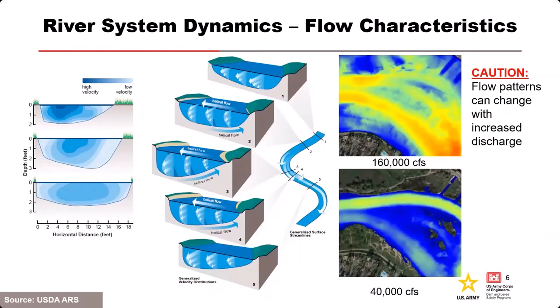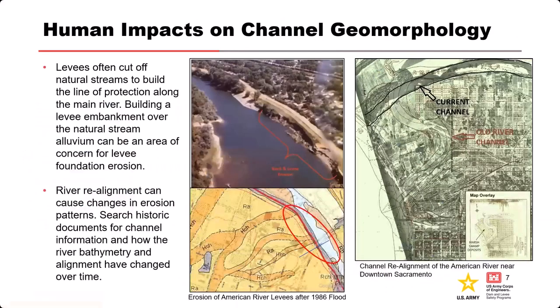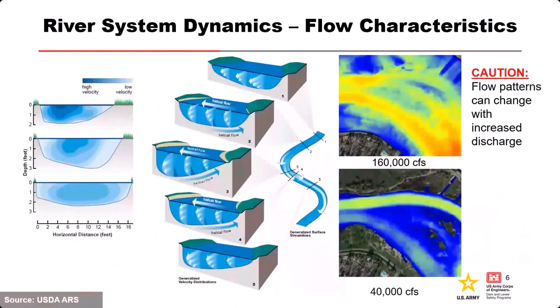Here's an American River plot: at 40,000 cfs the main channel is to the right as it flows downstream to the left. As the flood increases, you can see the predominant channel kind of redirects over to the other side.